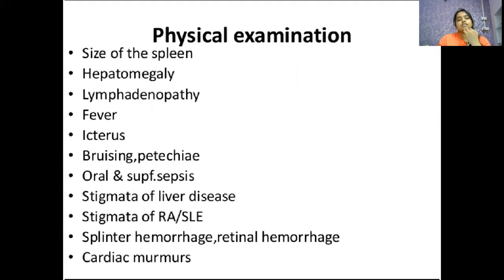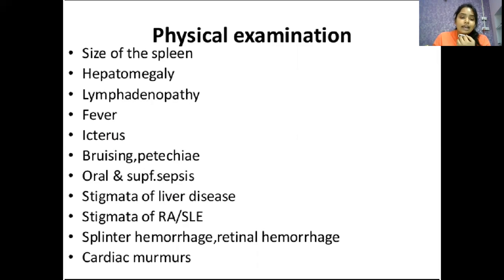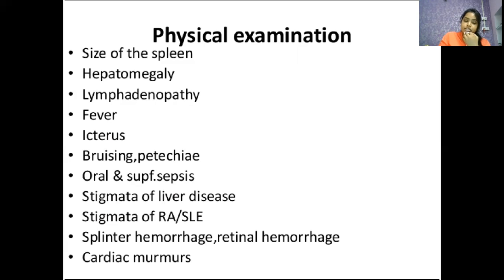Physical examination for splenomegaly should assess: size of the spleen, hepatomegaly, lymphadenopathy, fever, icterus, bruising, petechiae, oral and superficial signs, stigmata of liver disease, stigmata of rheumatoid arthritis and SLE, splinter hemorrhages, retinal hemorrhages, and cardiac murmur.